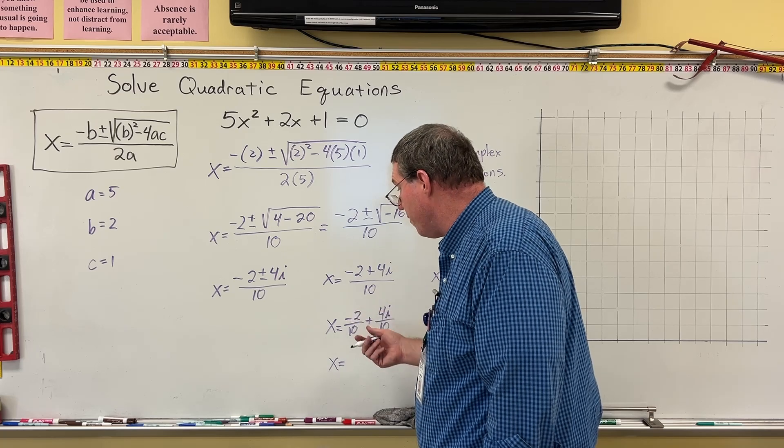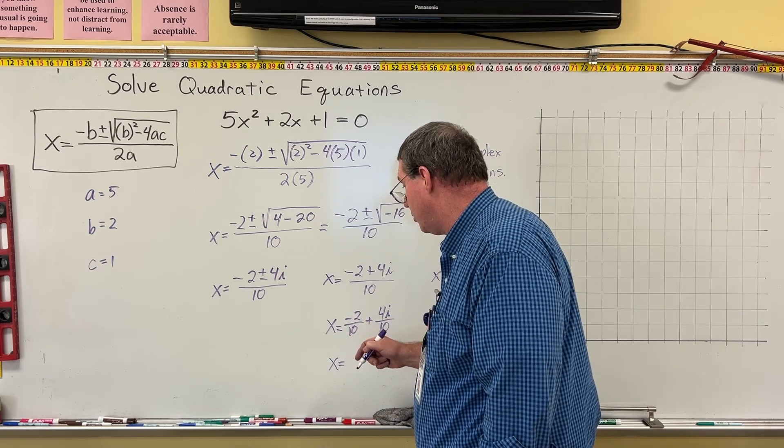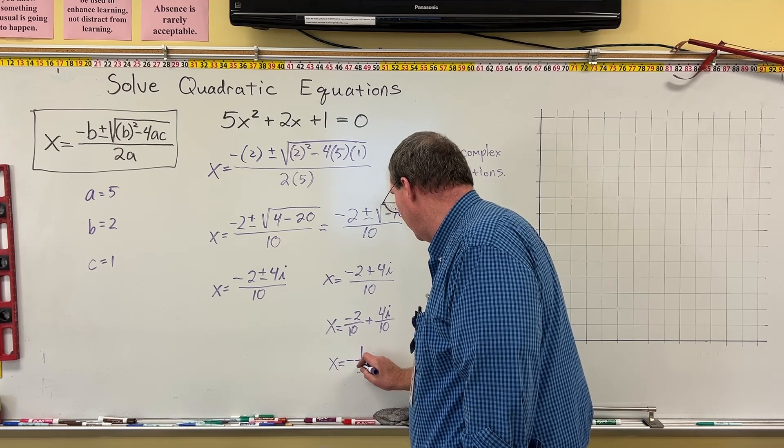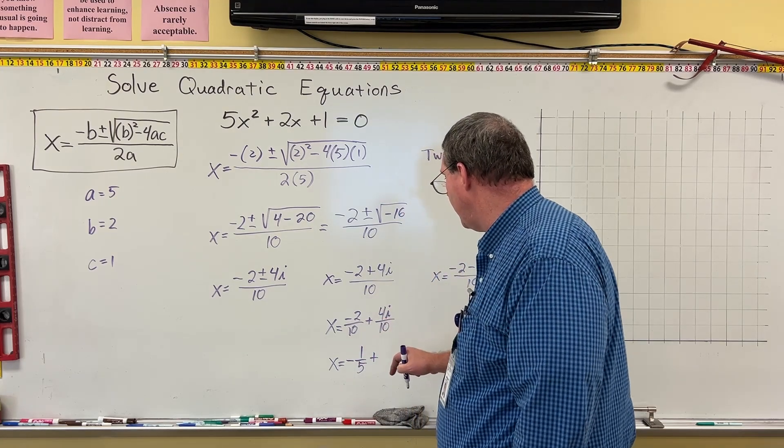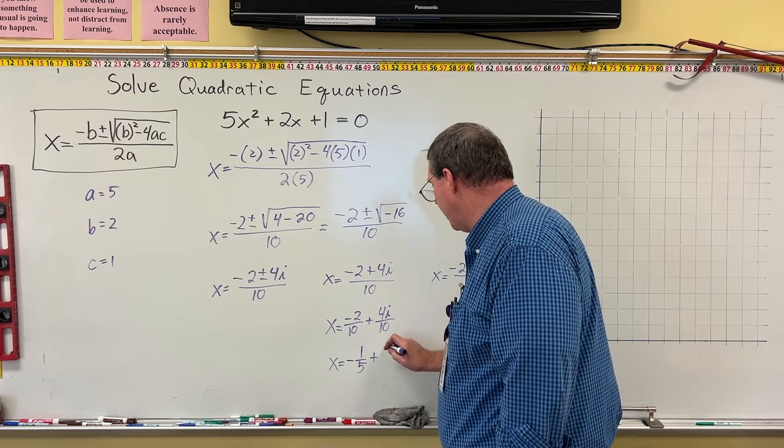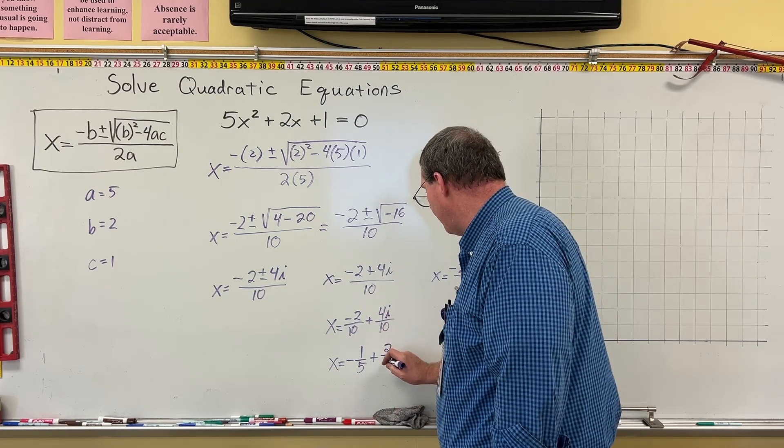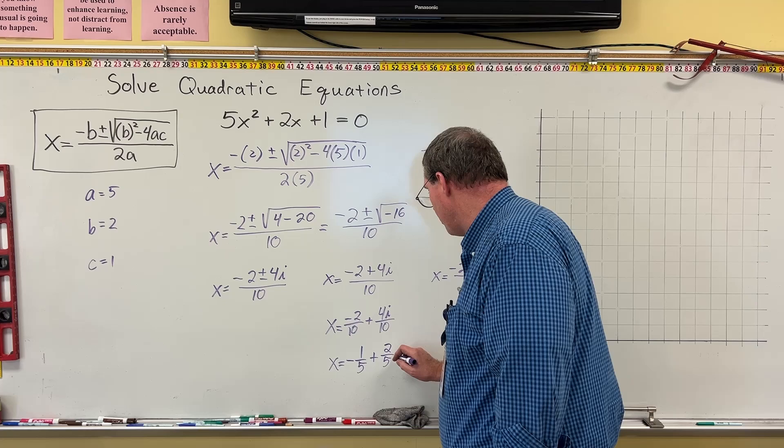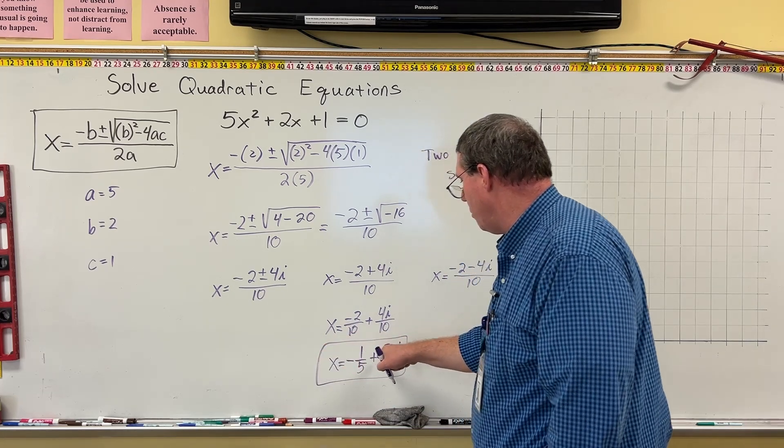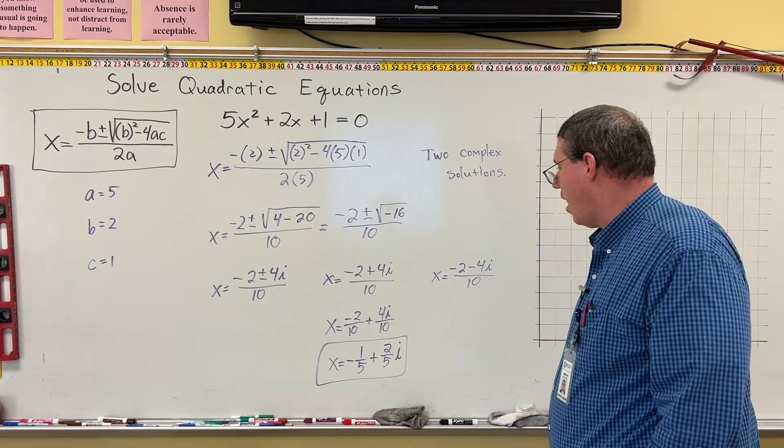So negative 2 is divisible by 2, and 10 is divisible by 2. So it becomes negative 1 fifth plus, and then 4 over 10. Both 4 and 10 are divisible by 2. 4 divided by 2 is 2. 10 divided by 2 is 5. So we have plus 2 fifths i. So one of our solutions is negative 1 fifth plus 2 fifths i.